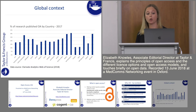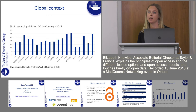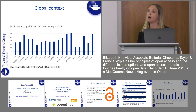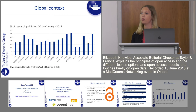Looking at it globally, this is some information from Clarivate Analytics Web of Science data, showing the percentage of research published by country. There's a broad range here. Perhaps you might expect the USA to be higher — they haven't had the same uptake in Open Access as we have seen in mainland Europe, where Open Access has moved further on and there's a bigger uptake by authors.